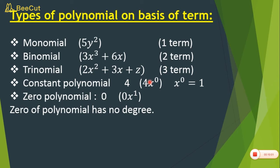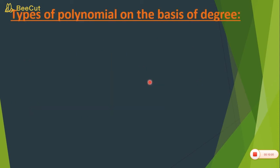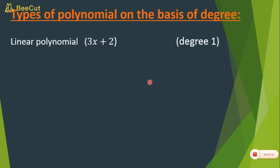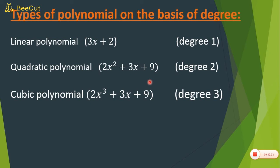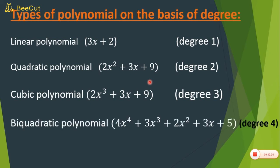Now classify polynomials on the basis of degree. The degree means the highest exponent of the polynomial. If the highest exponent is 1, it is called a linear polynomial. If degree is 2, it is called a quadratic polynomial. If degree is 3, it is called a cubic polynomial. If degree is 4, it is called a bi-quadratic polynomial. A constant polynomial has degree 0, because 8 can be written as 8 times x to the power 0, and the exponent is 0.